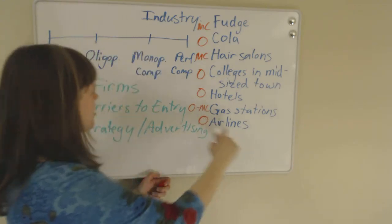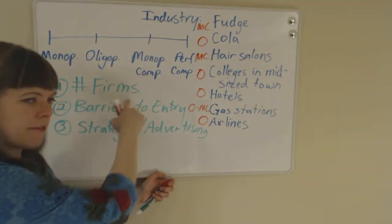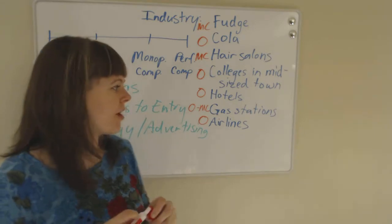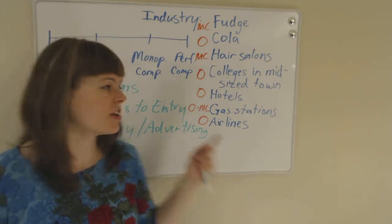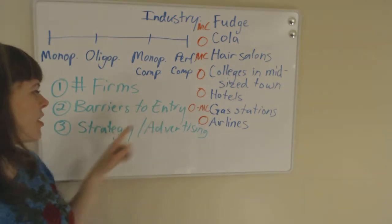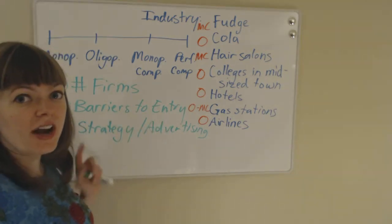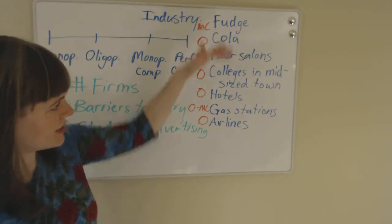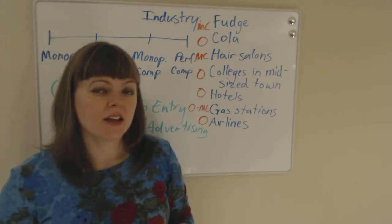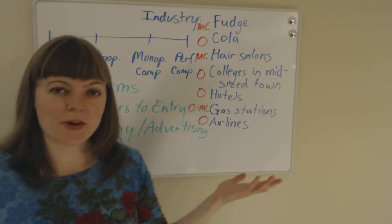So this is another example of one where the number of firms was less than 10. We couldn't fit it on both of our hands. But there were big firms we could identify and we could definitely identify barriers to entry and probably also some strategy and considerations for airlines. So monopolistic competition versus oligopoly, that was a summary.